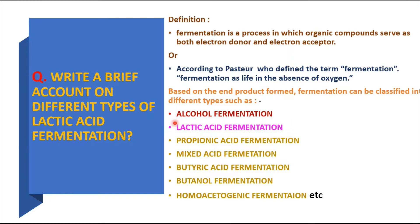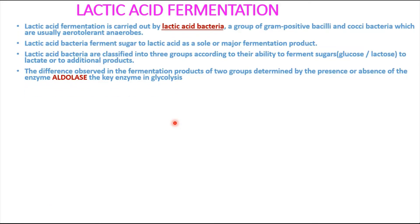Lactic acid fermentation is carried out by a group of bacteria called lactic acid bacteria, which may be gram-positive bacilli or gram-positive cocci. These lactic acid bacteria are usually aerotolerant anaerobes — aerotolerant means they can grow in the presence of oxygen but they do not use oxygen.